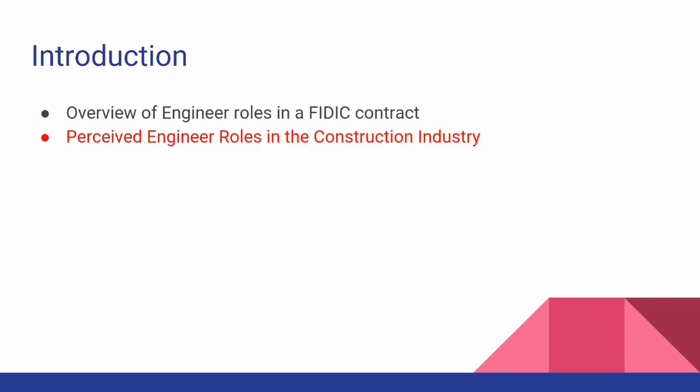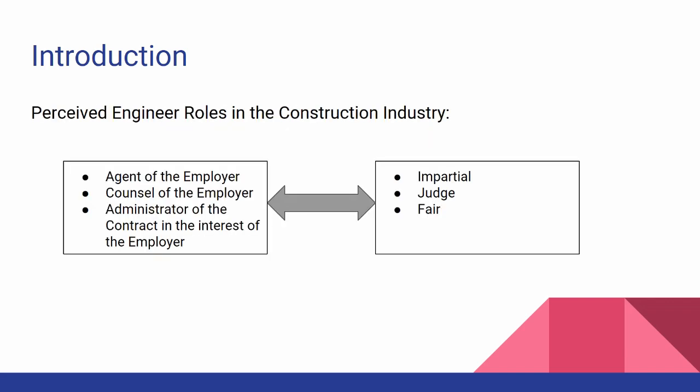The second part of the introduction covers the perceived engineer roles in the construction industry. In my opinion there are two roles. The first perception among practitioners is that regardless of what the contract says, the engineer is a biased entity — an agent of the owner, administering the contract in the owner's interest. The other perception is that the engineer, going back to the 1987 edition, should actually be impartial and fair, like a judge. In both cases, the engineer is doomed to fail.